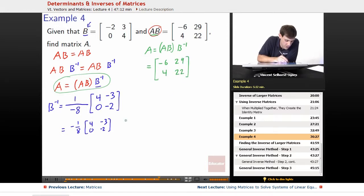And B inverse is negative 1 eighth, so times negative 1 eighth, 4, negative 3, 0, negative 2.